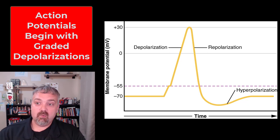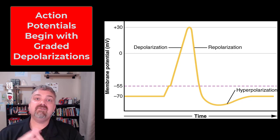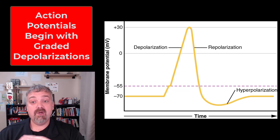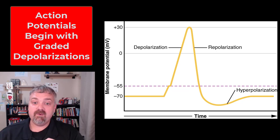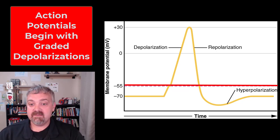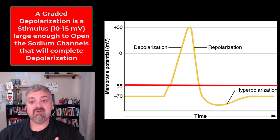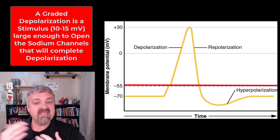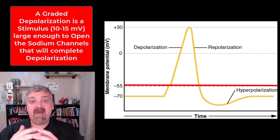Now we have the actual action potential. We are going to fire this nerve, we are going to depolarize it. To trigger this electrical signal we need this negative 70 millivolts to move — but it doesn't need to jump all the way from negative 70 to positive 30 right away. What we need is what is called a graded depolarization, shown by that dashed line. The stimulus that causes depolarization doesn't need to be that whole 100 millivolts; it needs to be 10 to 15 millivolts — because that is the threshold that will cause the sodium channels to pop open.